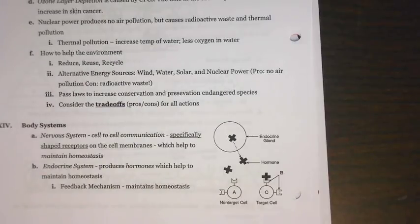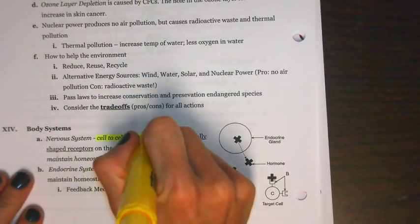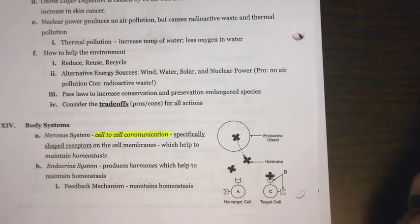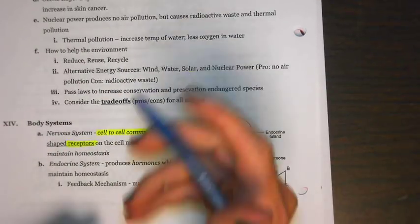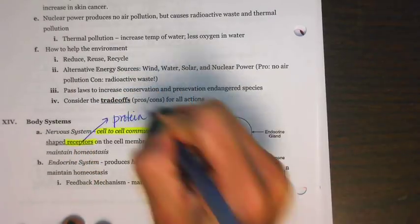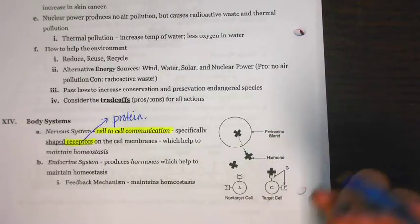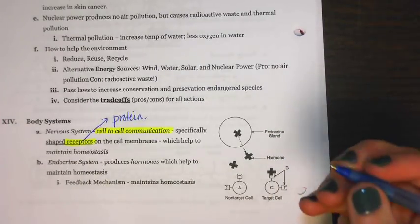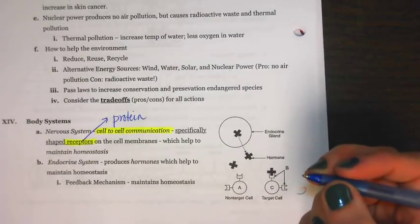So first thing we have is going to be the nervous system. The main function of that is going to be cell-to-cell communication. Now how are these cells actually capable of talking to one another? That's because they have receptors on them. Receptors are really just a fancy type of protein. They are on the top of the cell membrane and they allow cells to actually talk to one another.